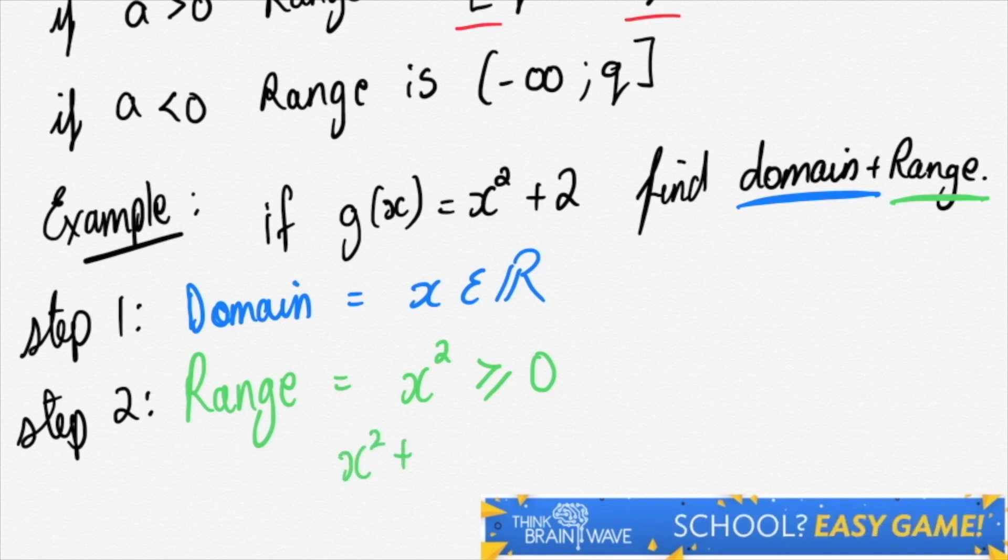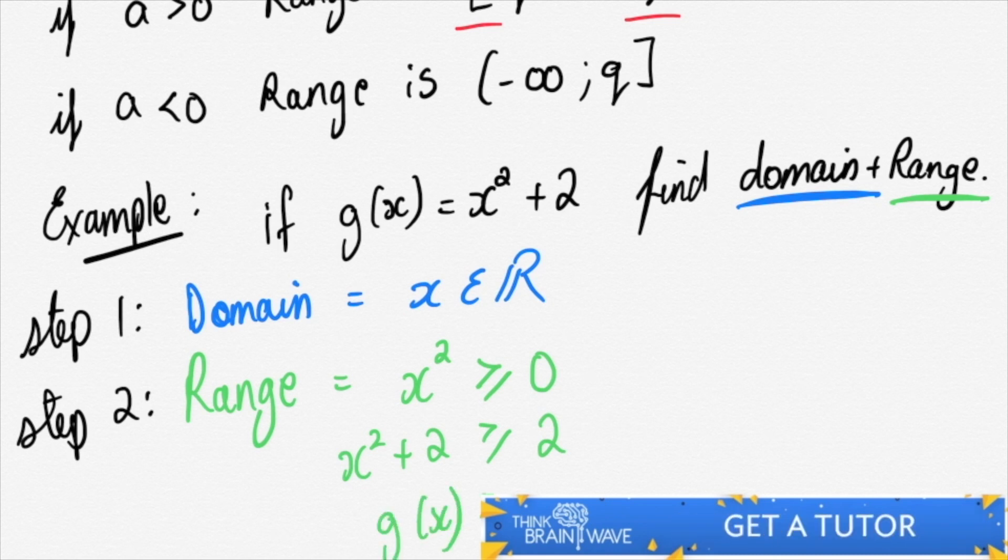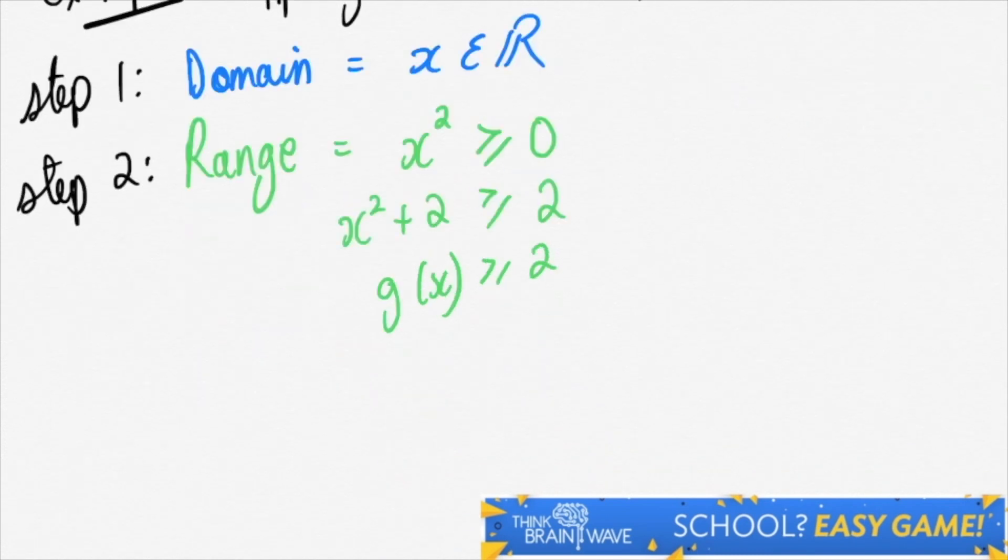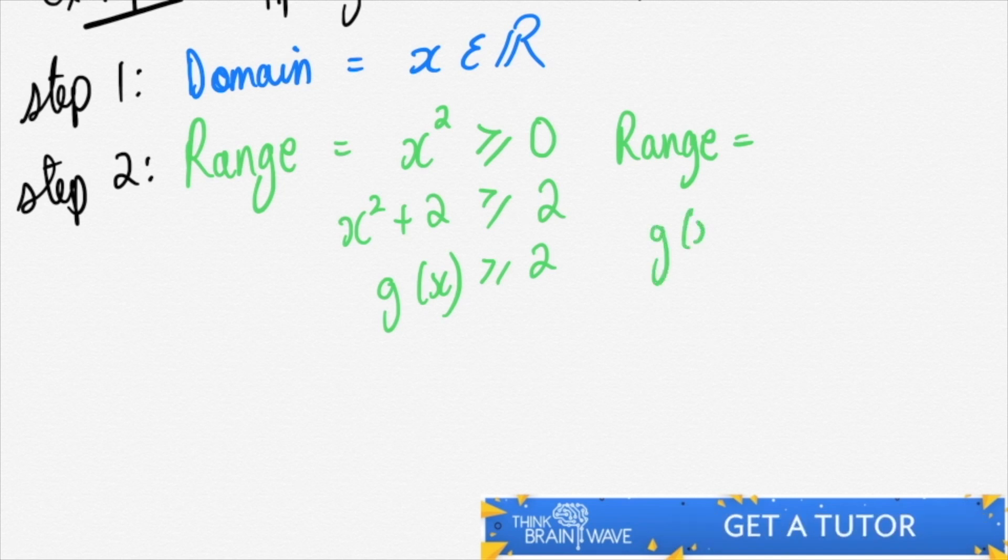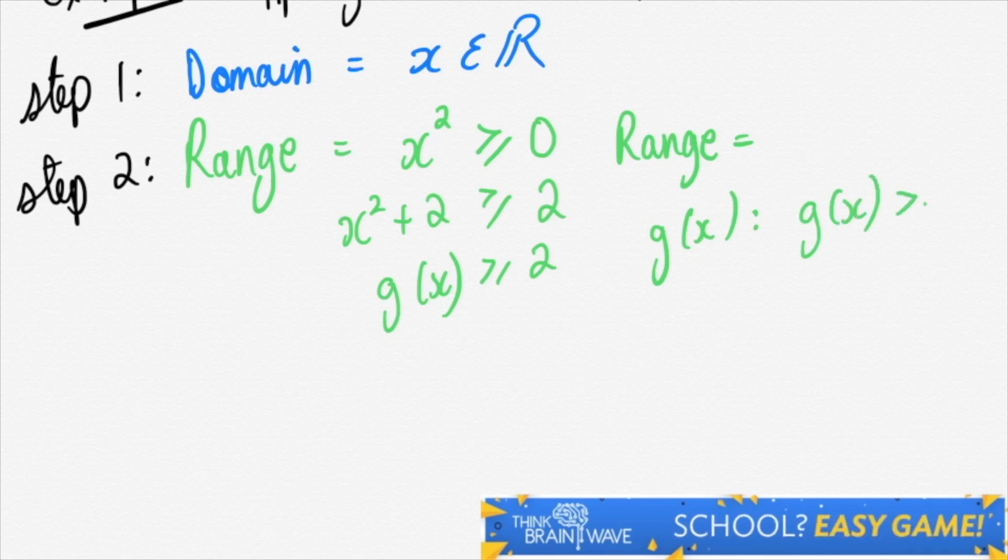The range, however, when x² is greater than or equal to 0, we say that x² plus 2 is greater than or equal to 2. And therefore, the graph of g(x) is greater than or equal to 2. And the range is between 2 and positive infinity, as we can see here.